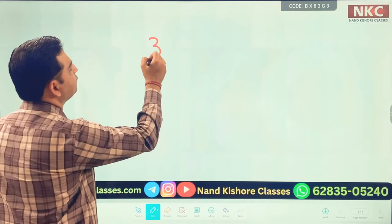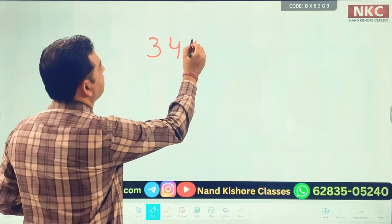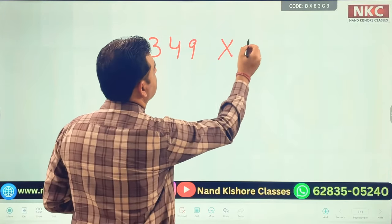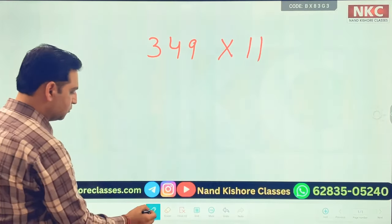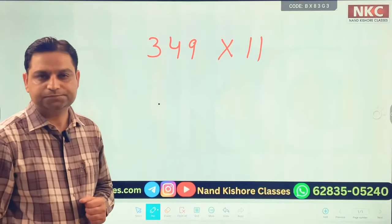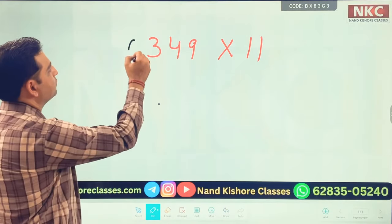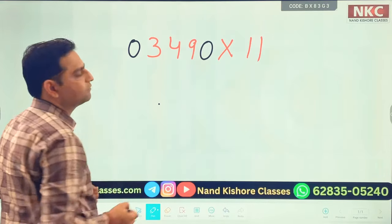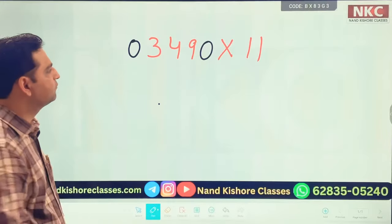3 digit number means let's suppose 3149. Let's suppose this is the number we are taking to multiply. What will we do now? Same rule. Place 0s in the left and right side and start adding from the end.